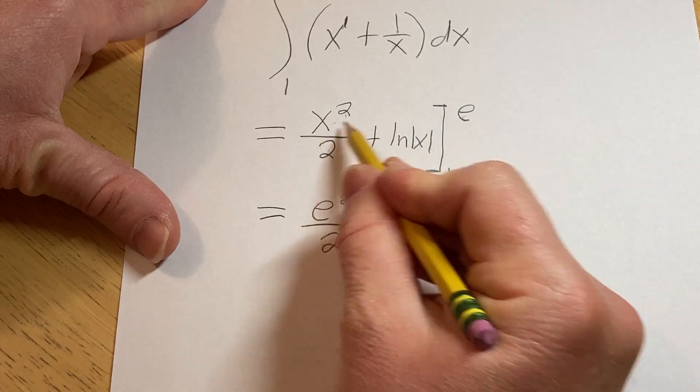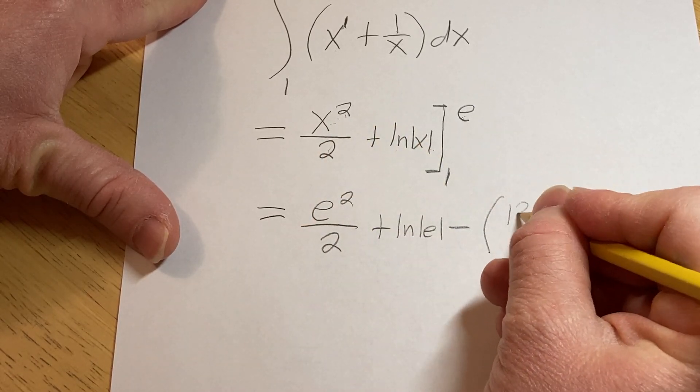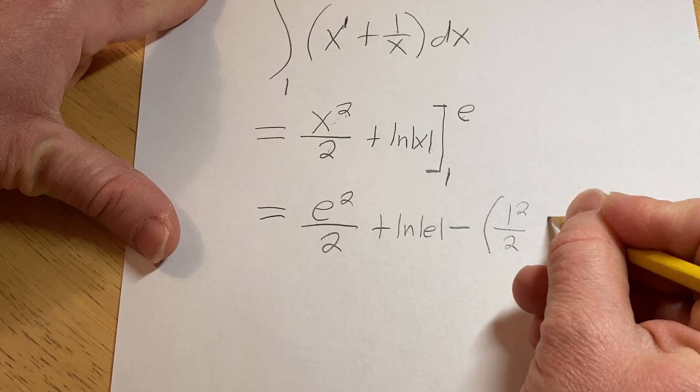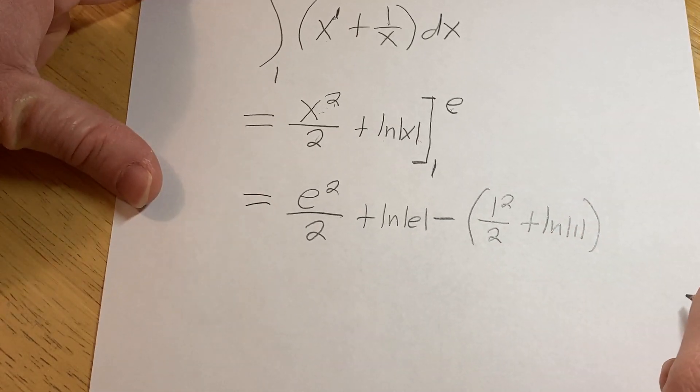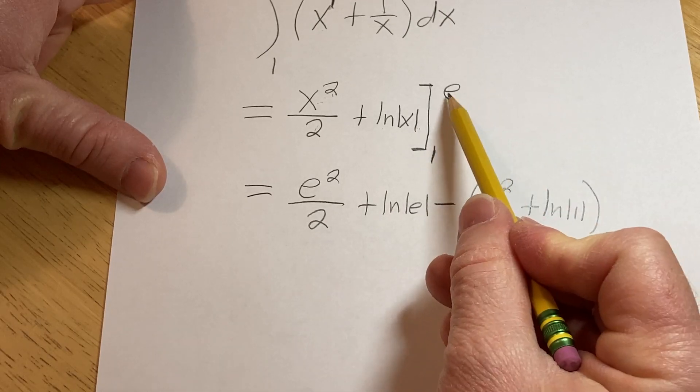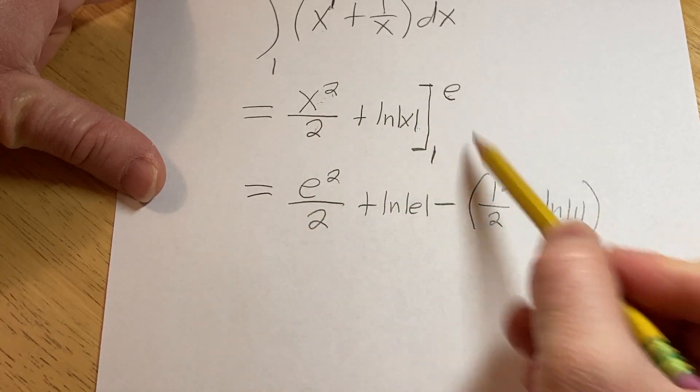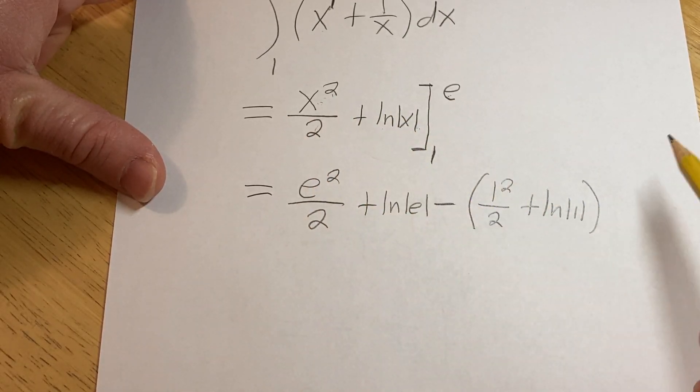parentheses, and now you put the 1 where all the x's are. So it'd be 1 squared over 2 plus the natural log of the absolute value of 1, right? Pretty simple. And again it's just following the steps. You put the e where the x is, you subtract, then you put the 1 where the x is.